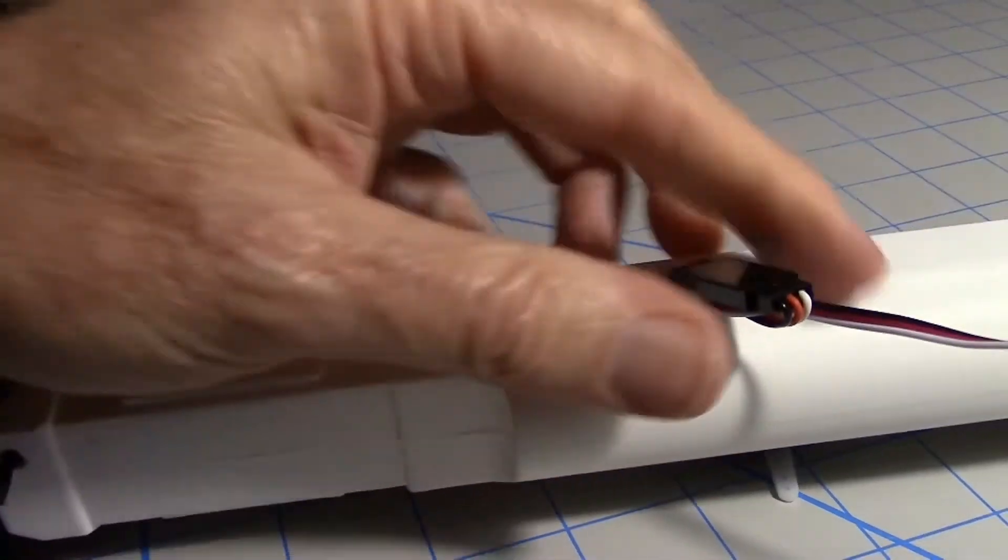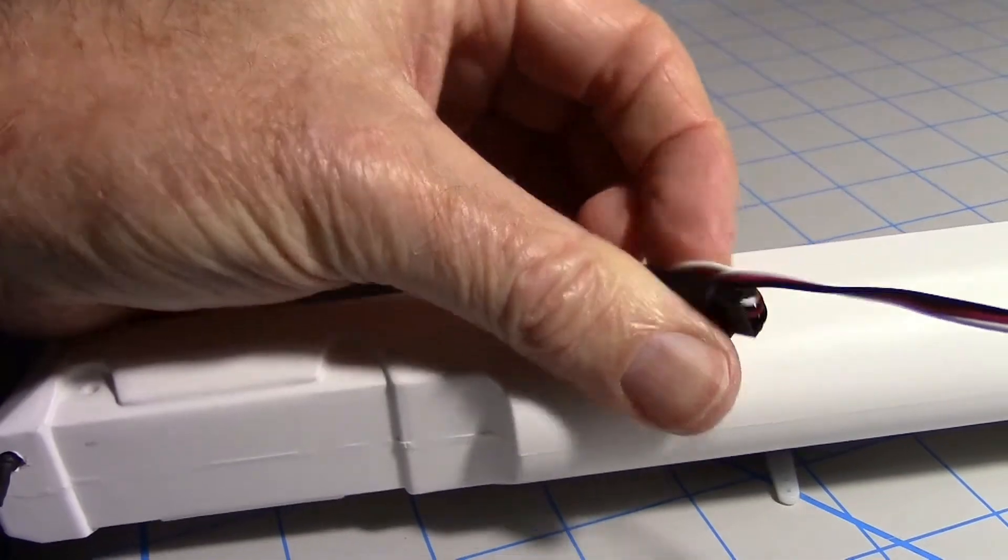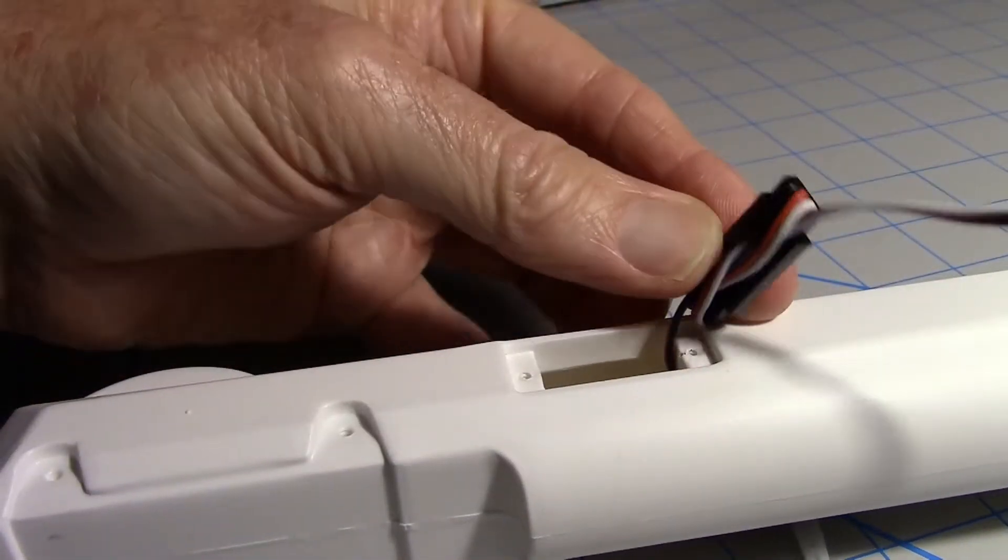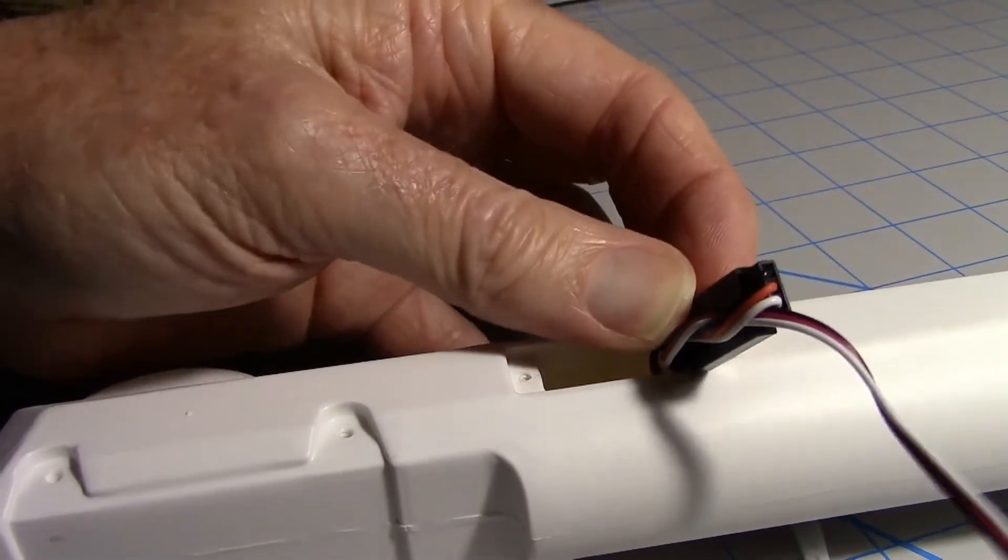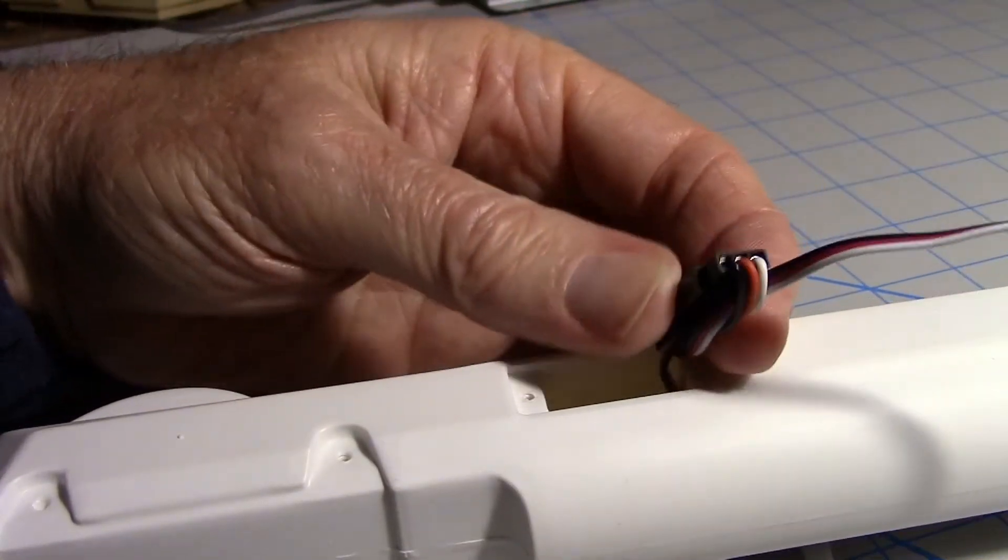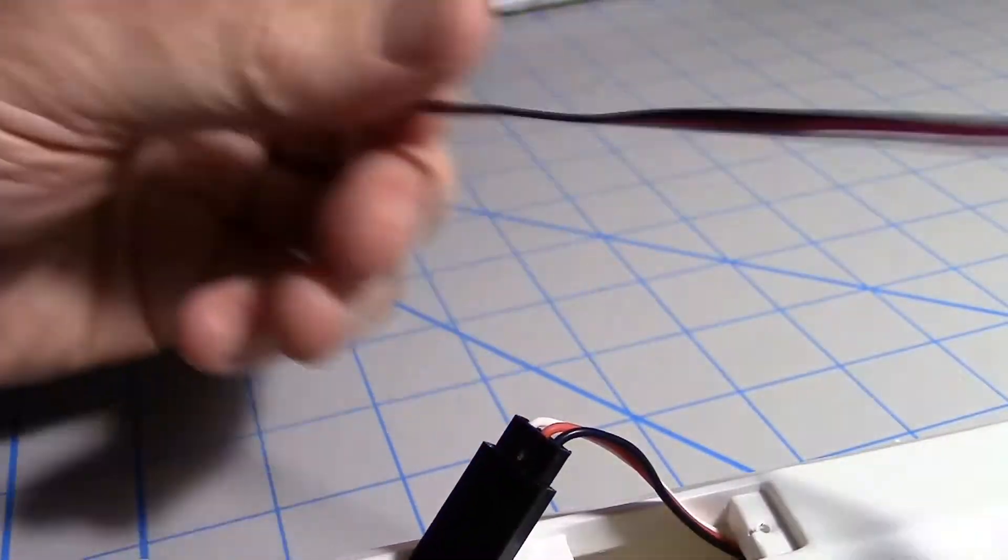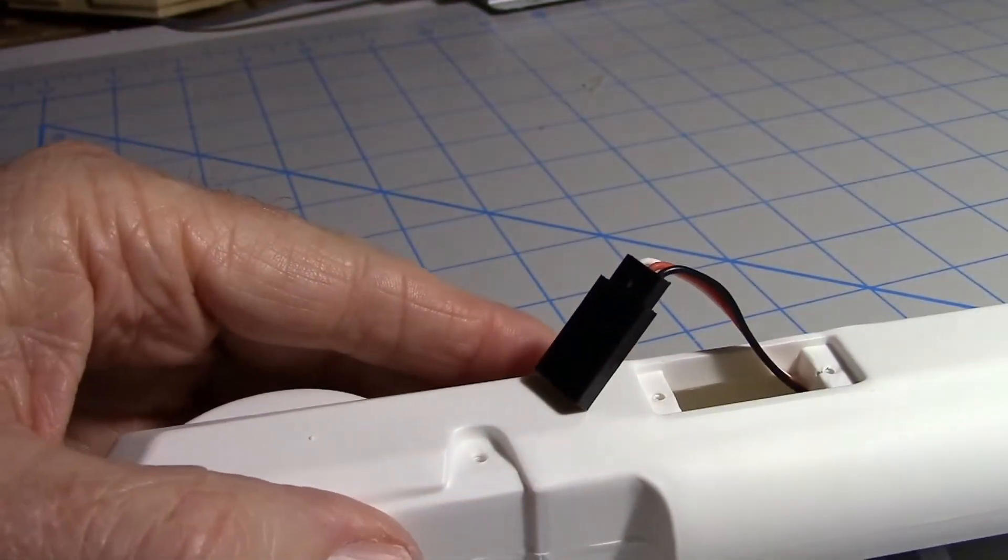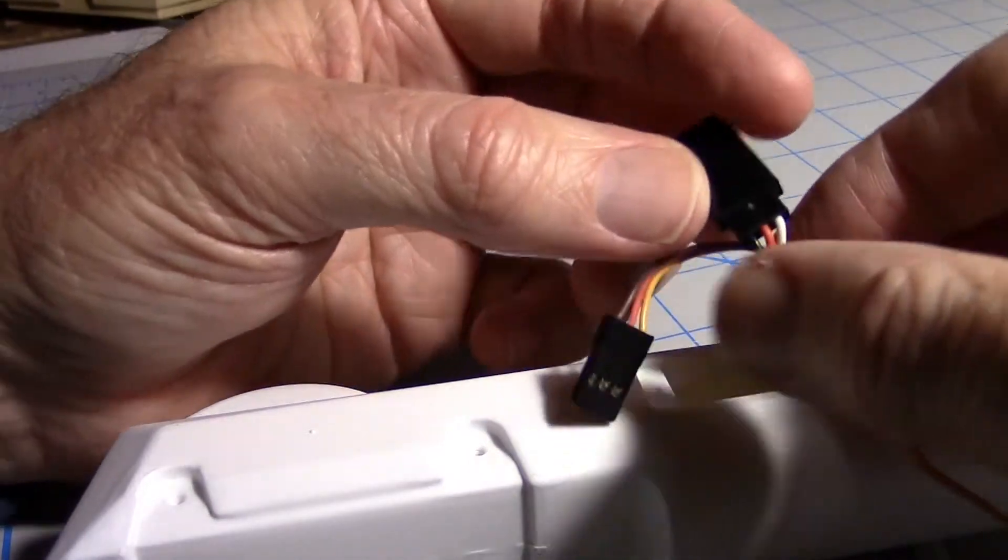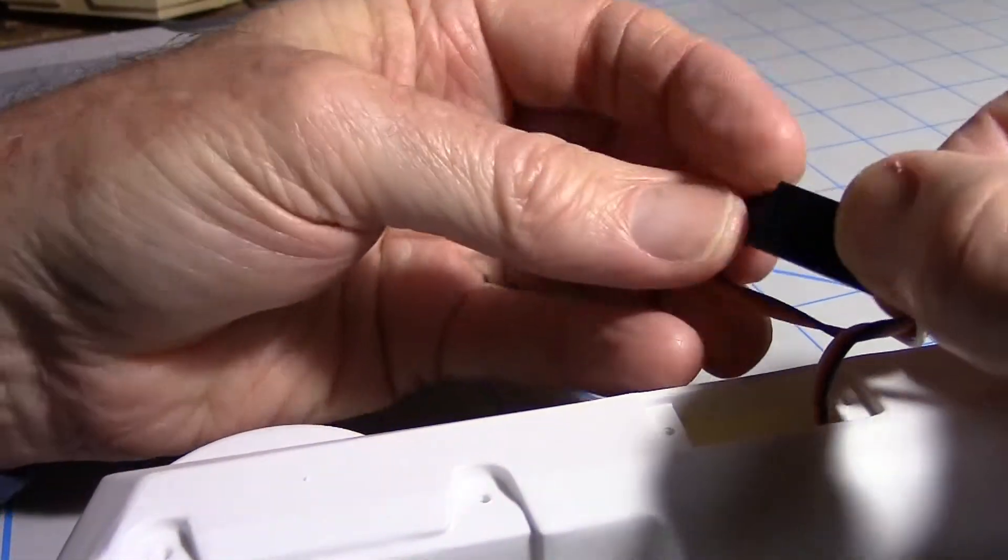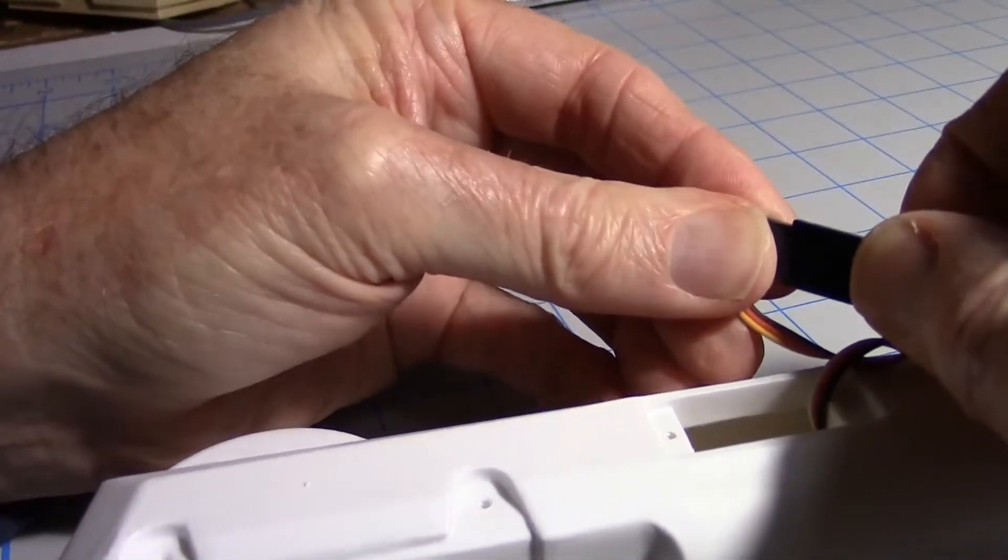Look how they knotted that together so they won't unplug, pretty cool. I'll go ahead and undo that and get the servo loose. It's all loose now. Let's install the new one. I'm going to try to make the same knot and plug it in, making sure the white wire and yellow wire match up.